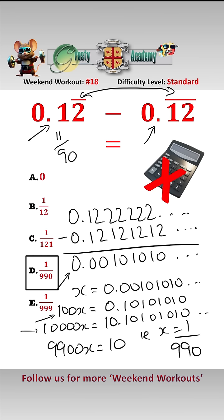This is 11 over 90, and this one here is 12 over 99, and taking one from the other gives you the same answer.